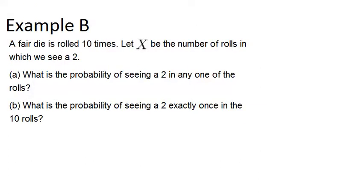Example B: a fair die is rolled 10 times. Let X be the number of rolls in which we see a 2. So we're interested in getting a 2 or not getting a 2. What is the probability of seeing a 2 in any one of the rolls? In general, the probability of getting a 2 will be 1 out of 6, because with a die there are 6 possible outcomes and they all have an equal probability.